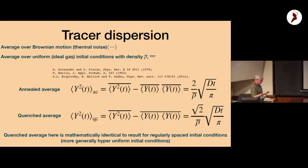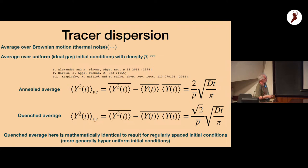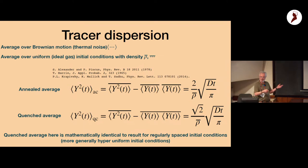There are two types of averages when looking at the mean squared displacement. You can take the average directly — the annealed average — or the quenched average, where you thermally average the displacement and then average over the disorder. This is analogous to the Edwards-Anderson order parameter in spin glasses: the average magnetization is zero but there's a disorder-induced correlation, giving rise to spin glass order.